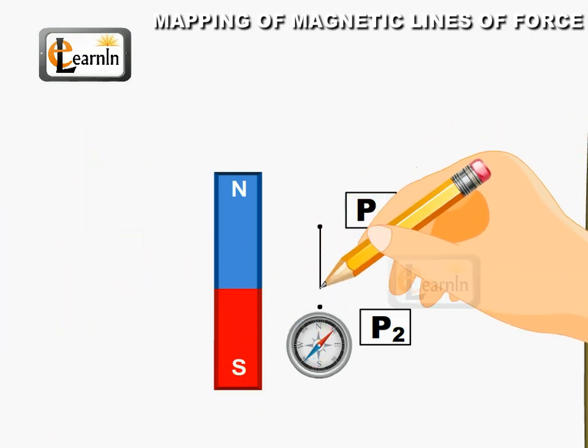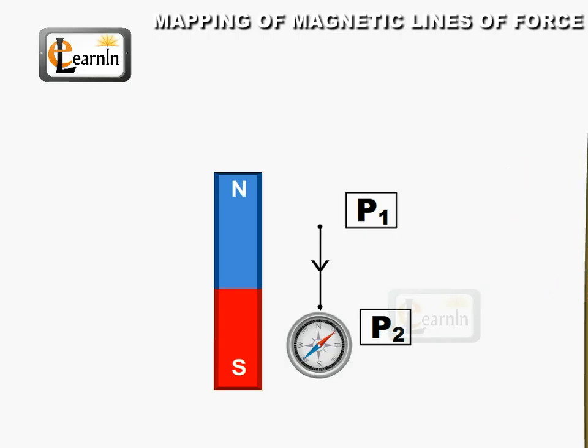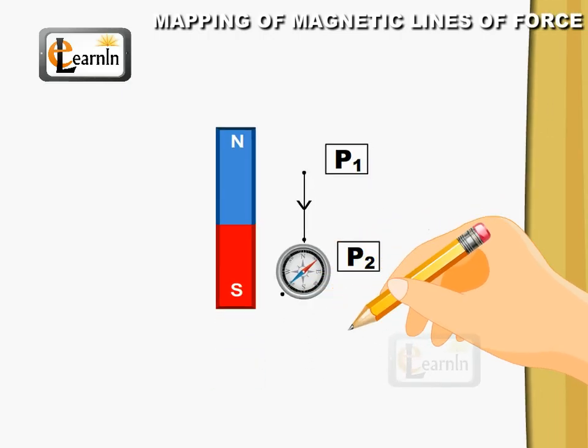Join P1 and P2 and mark the direction of the deflection. P1, P2 is a line.